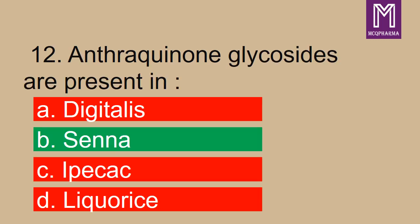Next, anthraquinone glycosides are present in? Correct answer: option B, senna.